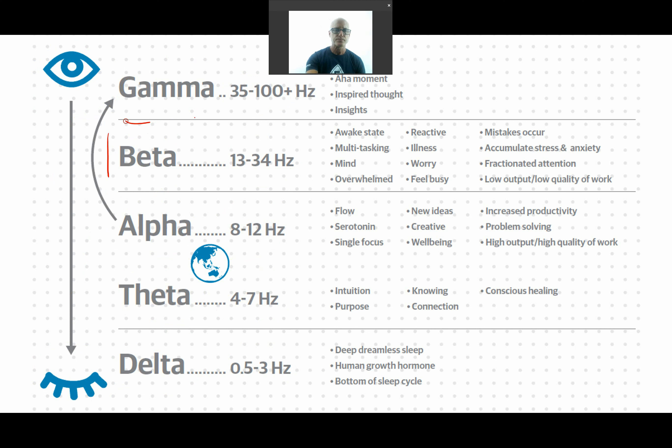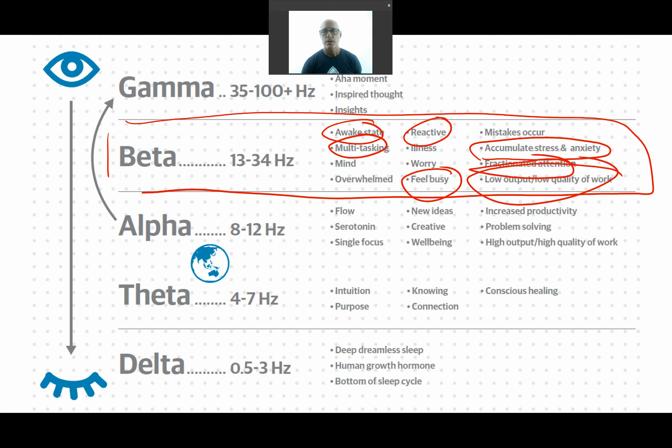I'm going to start at beta. Beta is an awake and doing state, the state we're in when we're multitasking. But what happens when we multitask, our attention gets fractionated. As business owners, there's so many things pulling on our attention externally and internally that it's easy to find ourselves with our attention fractionated. When our attention is fractionated, we have low output, low quality of work. We start accumulating stress and anxiety. We feel busy but we're not really being effective. We tend to be more reactive, and mistakes can occur because we're unable to focus. We tend to feel overwhelmed.